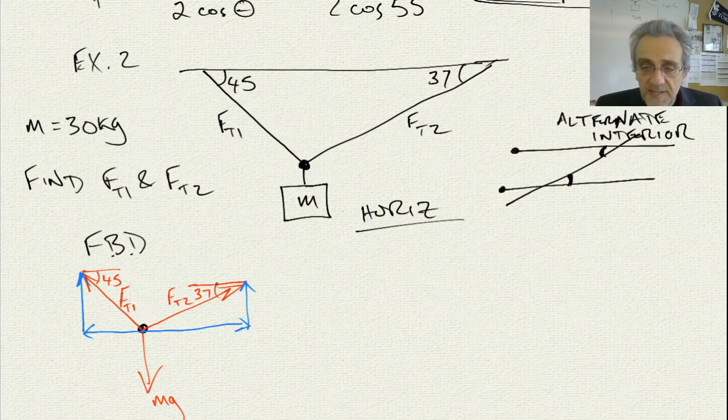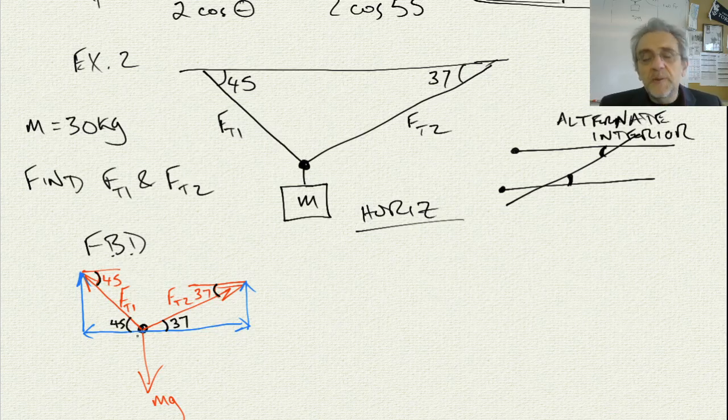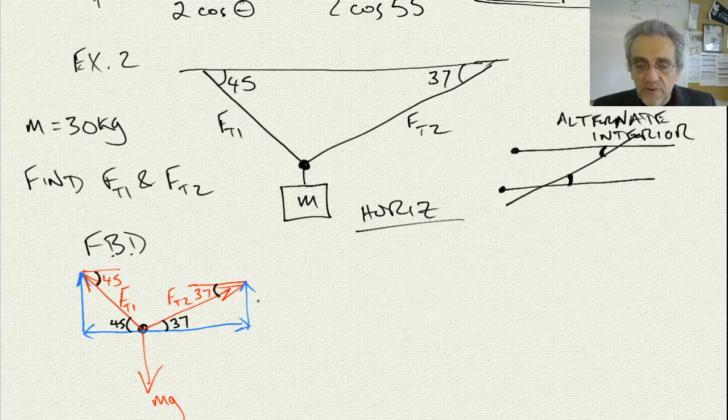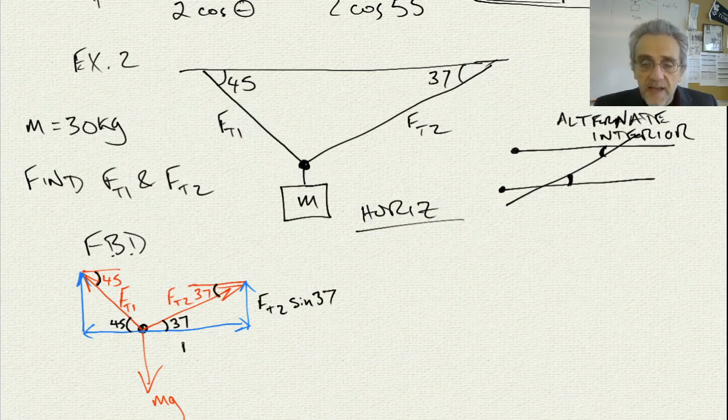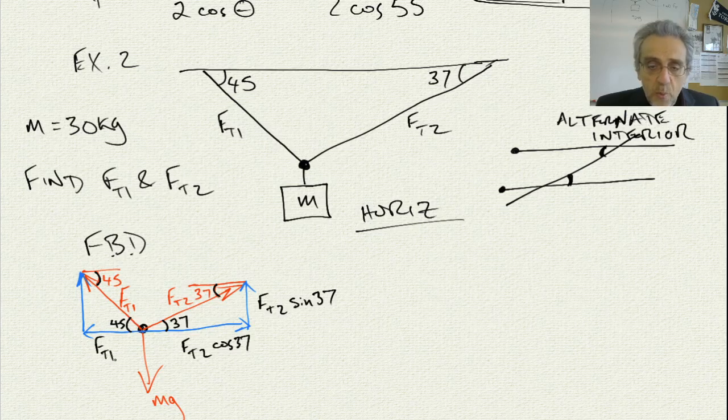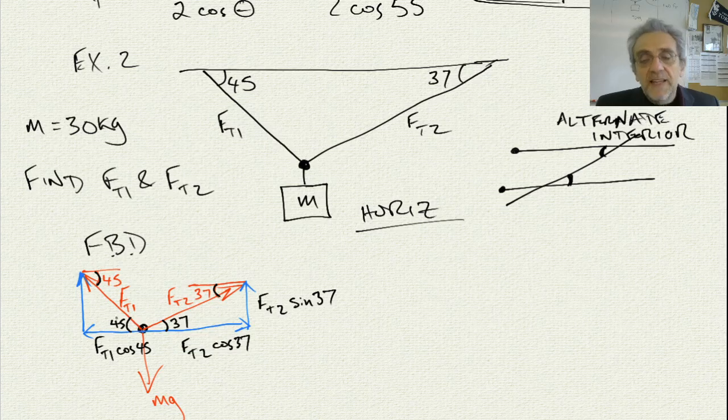That means that if this is 37 here, then this is also 37 here. And if that is 45, then this is 45. Now, 45 is kind of special because the complement of 45 is 45, but nonetheless, this works. Now, we can more easily calculate these vertical and horizontal. This is FT2 sine 37, and this is FT2 cosine 37, and this one here is FT1 cosine 45. And like I said, cosine 45, sine 45 is actually equal, so, but we still want to do it properly. And this is FT1 sine 45, okay?